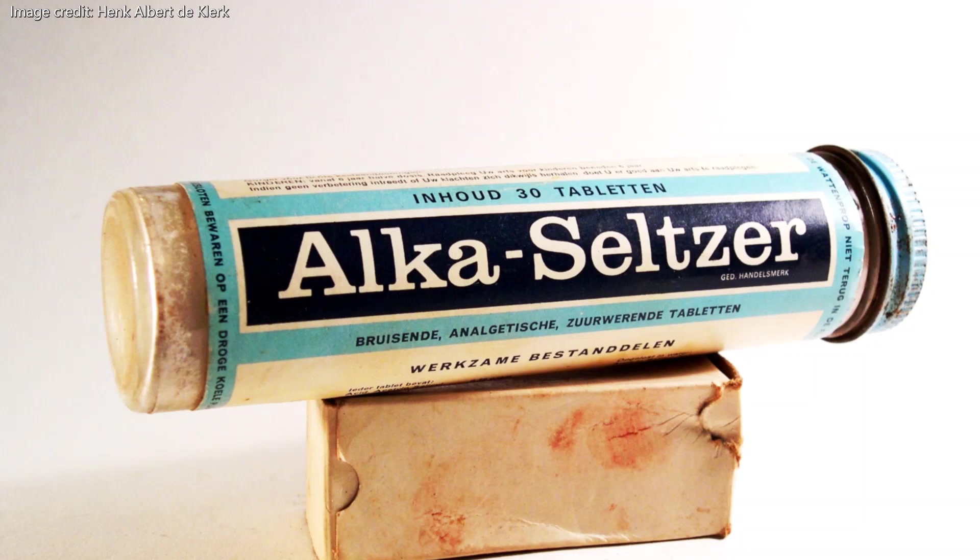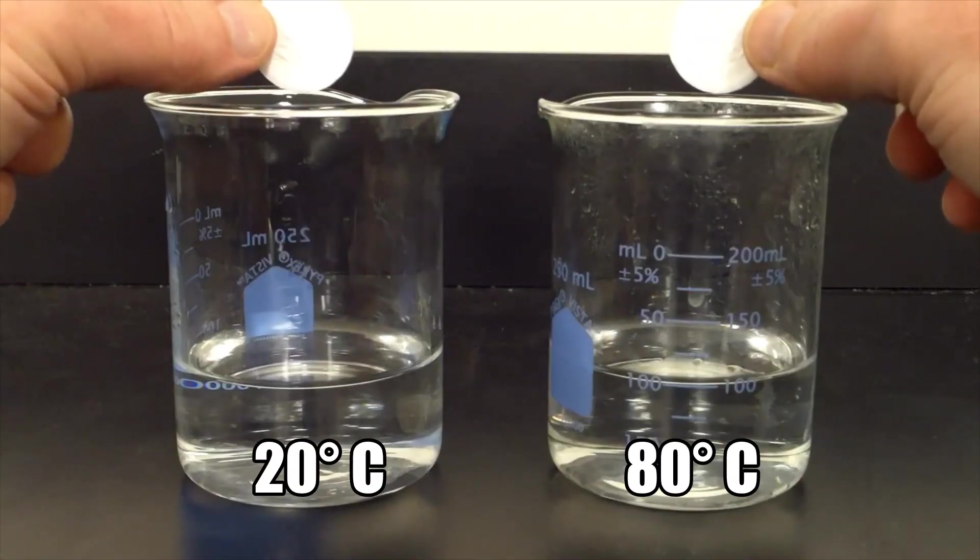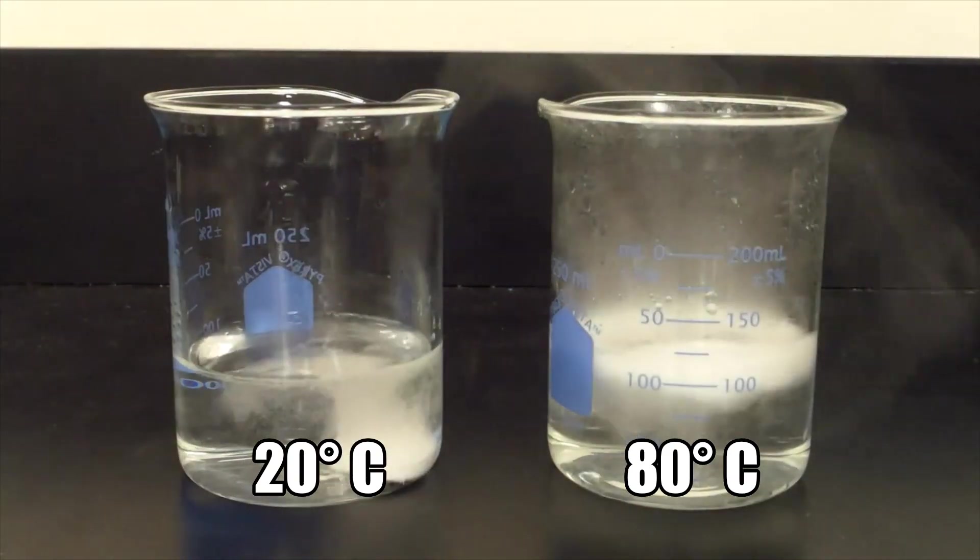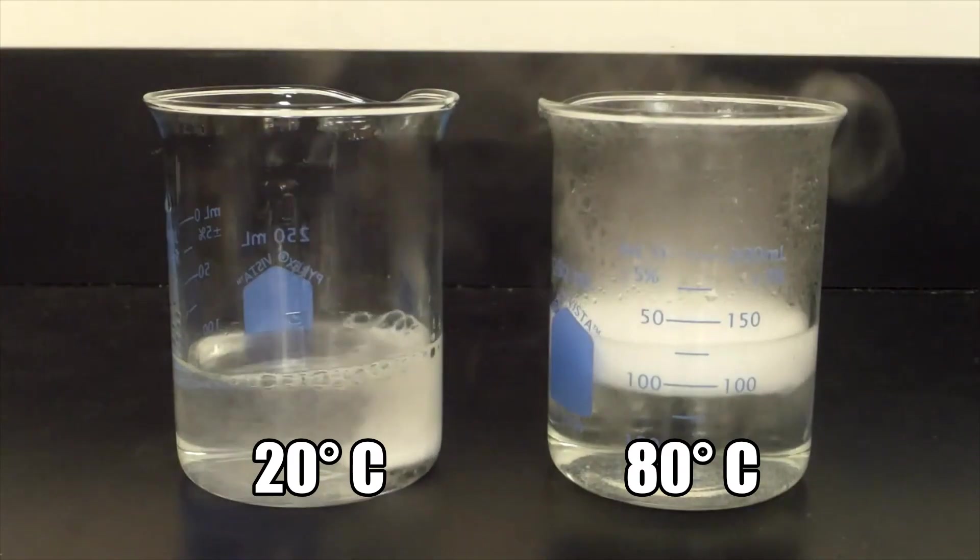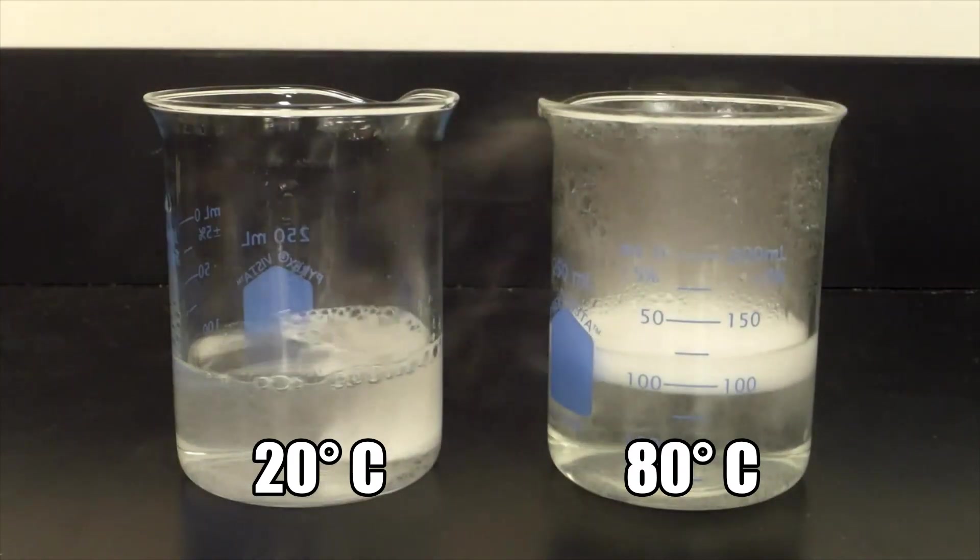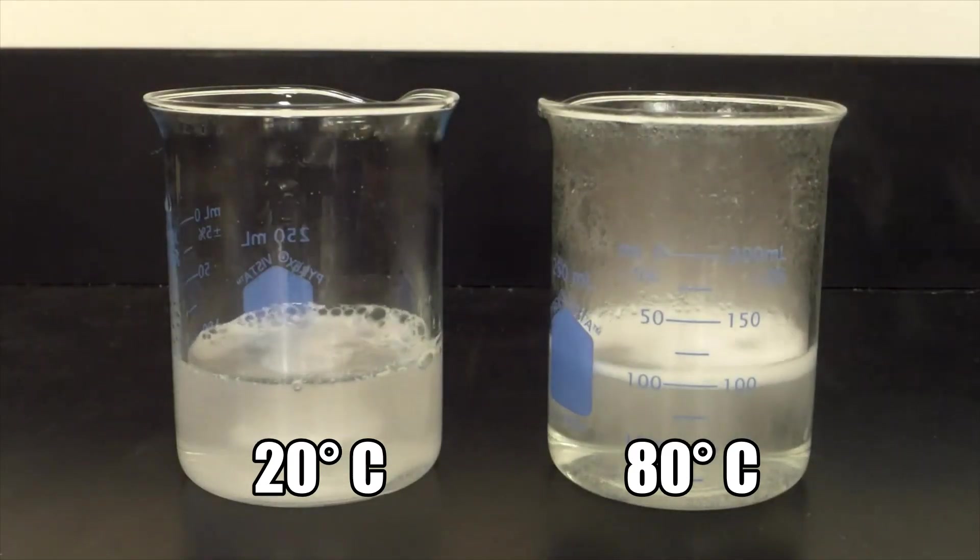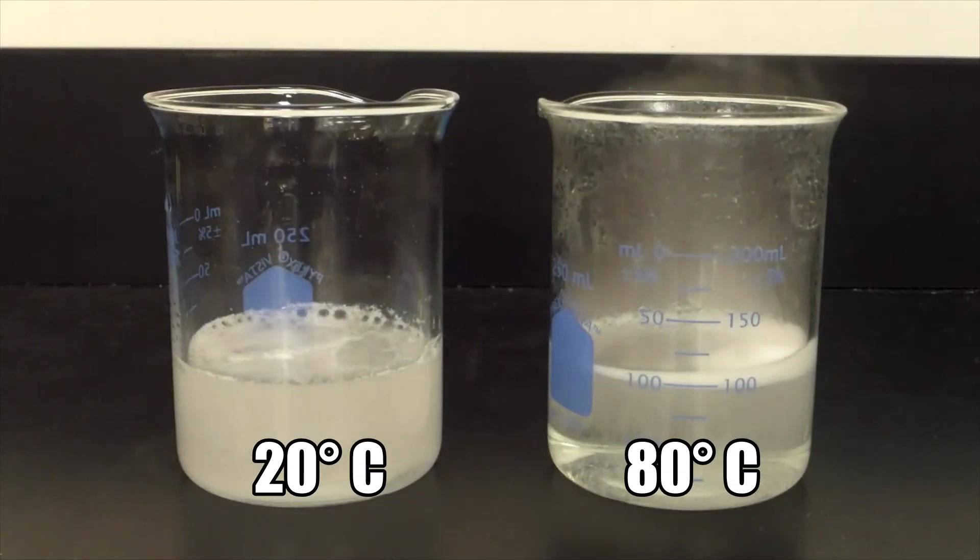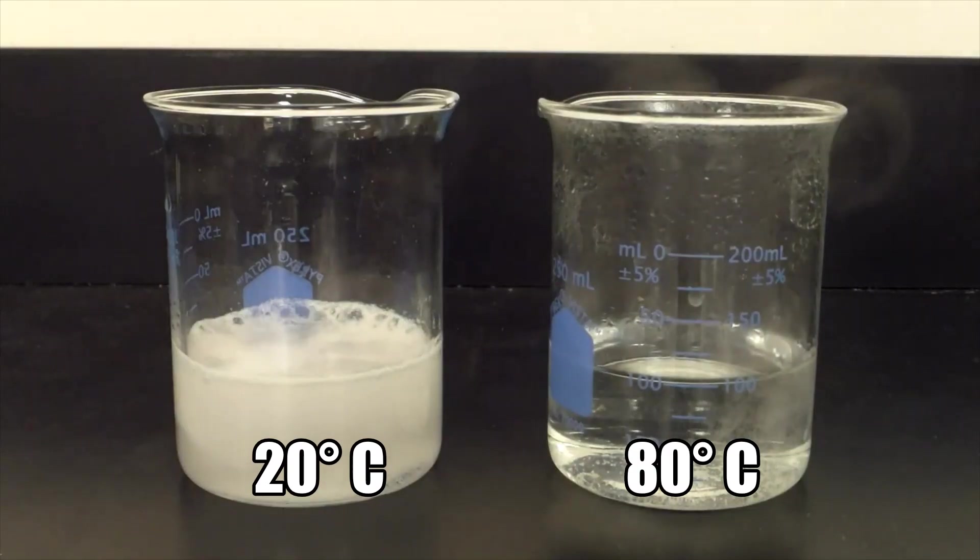Let's take a look at a simple reaction that takes place when an effervescent antacid tablet is dropped into water. Antacid tablets are made using sodium bicarbonate and citric acid, which can react when the tablet is dropped into water producing carbon dioxide gas. In this lab clip tablets were dropped into two beakers of water. The left beaker held water at 20 degrees Celsius and the right beaker was filled with water at 80 degrees Celsius. The reaction in the warmer water is visibly more vigorous and stops bubbling sooner, meaning that the reaction is completed more quickly because of a higher reaction rate.